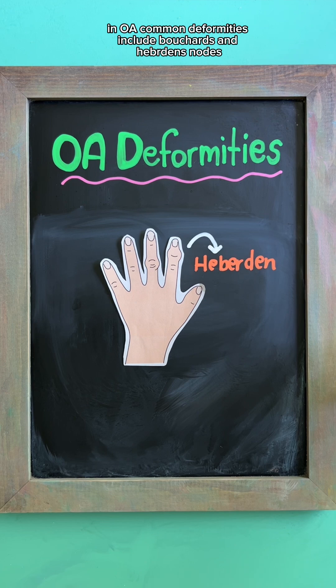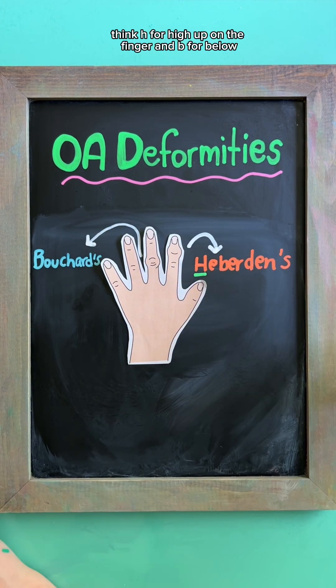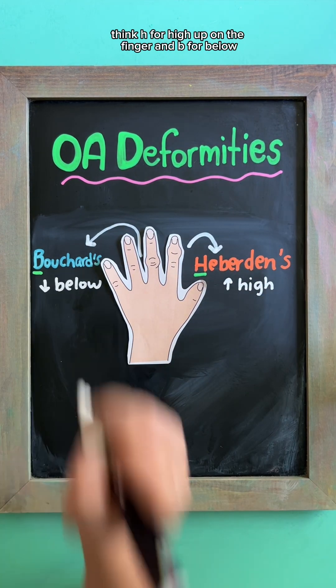In OA, common deformities include Bouchard's and Heberden's nodes. Think H for high up on the finger and B for below.